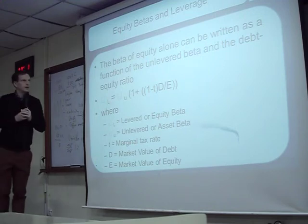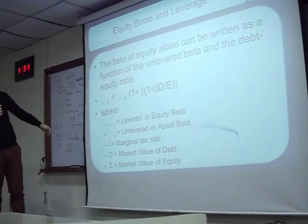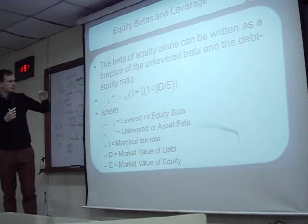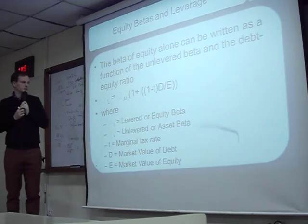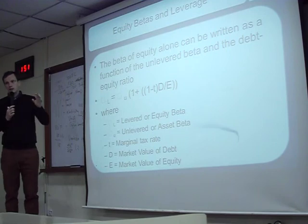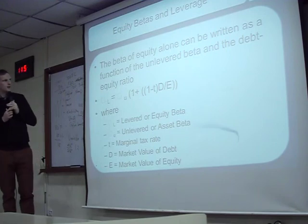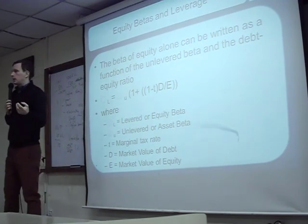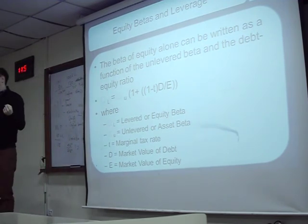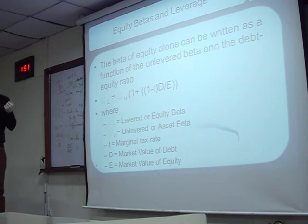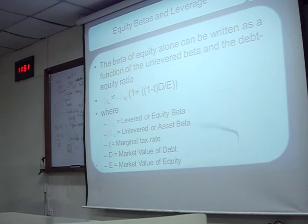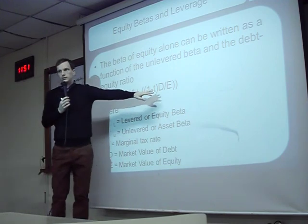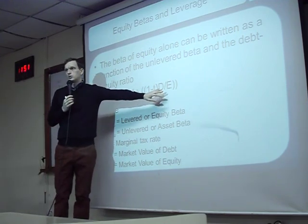Beta of equity alone can be written as a function of the unlevered beta and the debt-to-equity ratio. We can find an unlevered beta — a beta which does not include the debt. We use the debt-to-equity ratio to do this, which measures how much debt we have compared to equity.